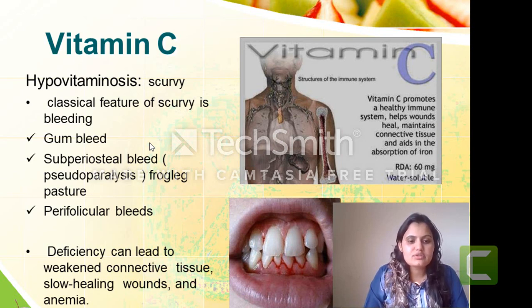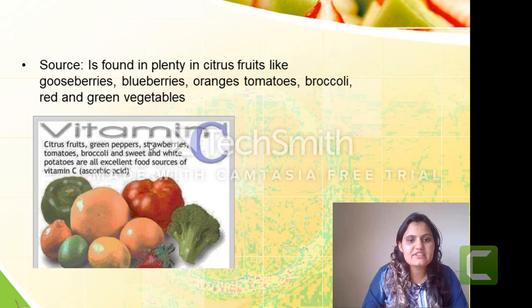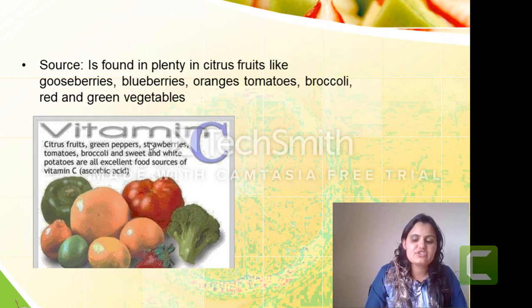Deficiency of vitamin C will also lead to anemia. The sources for vitamin C are mainly plant-based citrus fruits like gooseberries, blueberries, oranges, tomatoes, broccoli, and red and green leafy vegetables.